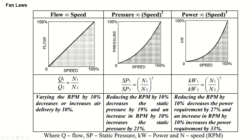The second fan law states that pressure is directly proportional to the square of RPM. This means that reducing RPM by 10% decreases pressure by 19%, while increasing RPM by 10% increases pressure by 21%.